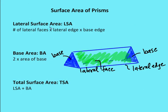Total surface area encompasses the lateral surface area plus the area of the bases. Remember, there are two bases that are parallel and congruent in a prism, so the total surface area equals the lateral surface area (LSA) plus 2 times the area of one base. For a triangular prism, that means three lateral faces plus two triangular bases.